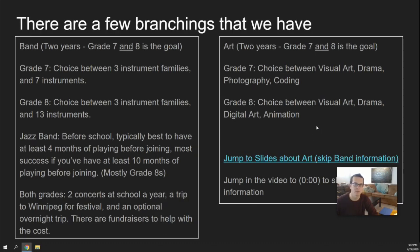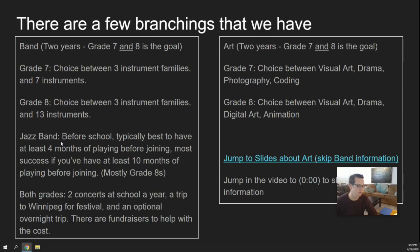There are a few branchings that happen for grade 7. One is that you can pick between band and art. Inside of band, you have a choice between three different instrument families and seven different instruments. Just to give you an idea, in grade 8, we add a couple more instruments — we go from 7 to 13. Jazz band is also one of the things that is inside of band. Typically, the students that find the most success in jazz band have already had some experience on their instrument of about a year.